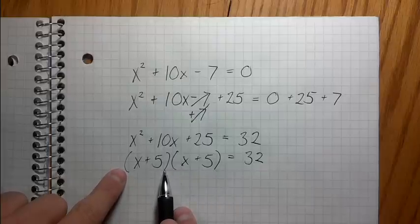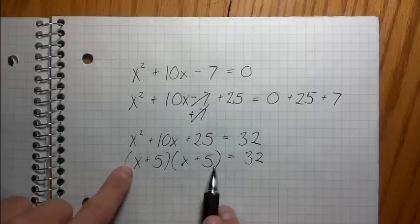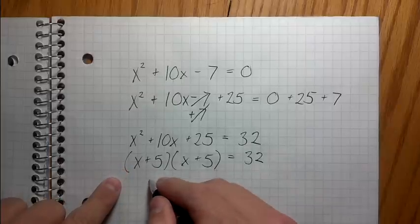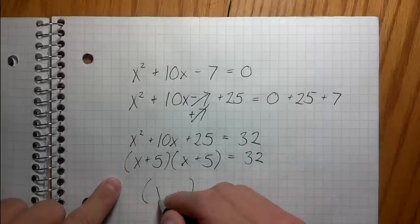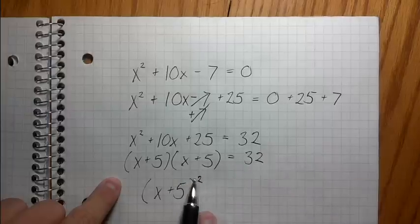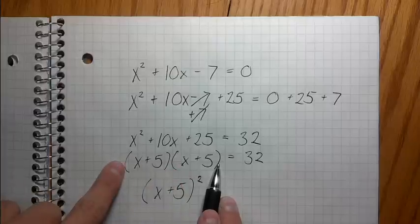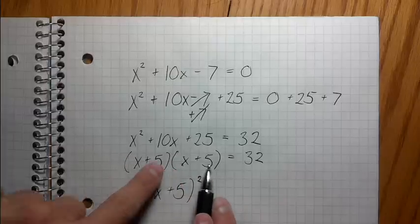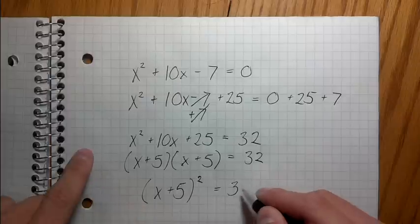Well, see, the fact that these two factors are the same means that I can actually just rewrite this as x plus 5 squared, right? Because squaring just means something times itself. X plus 5 times itself is just x plus 5 squared. This equals 32.